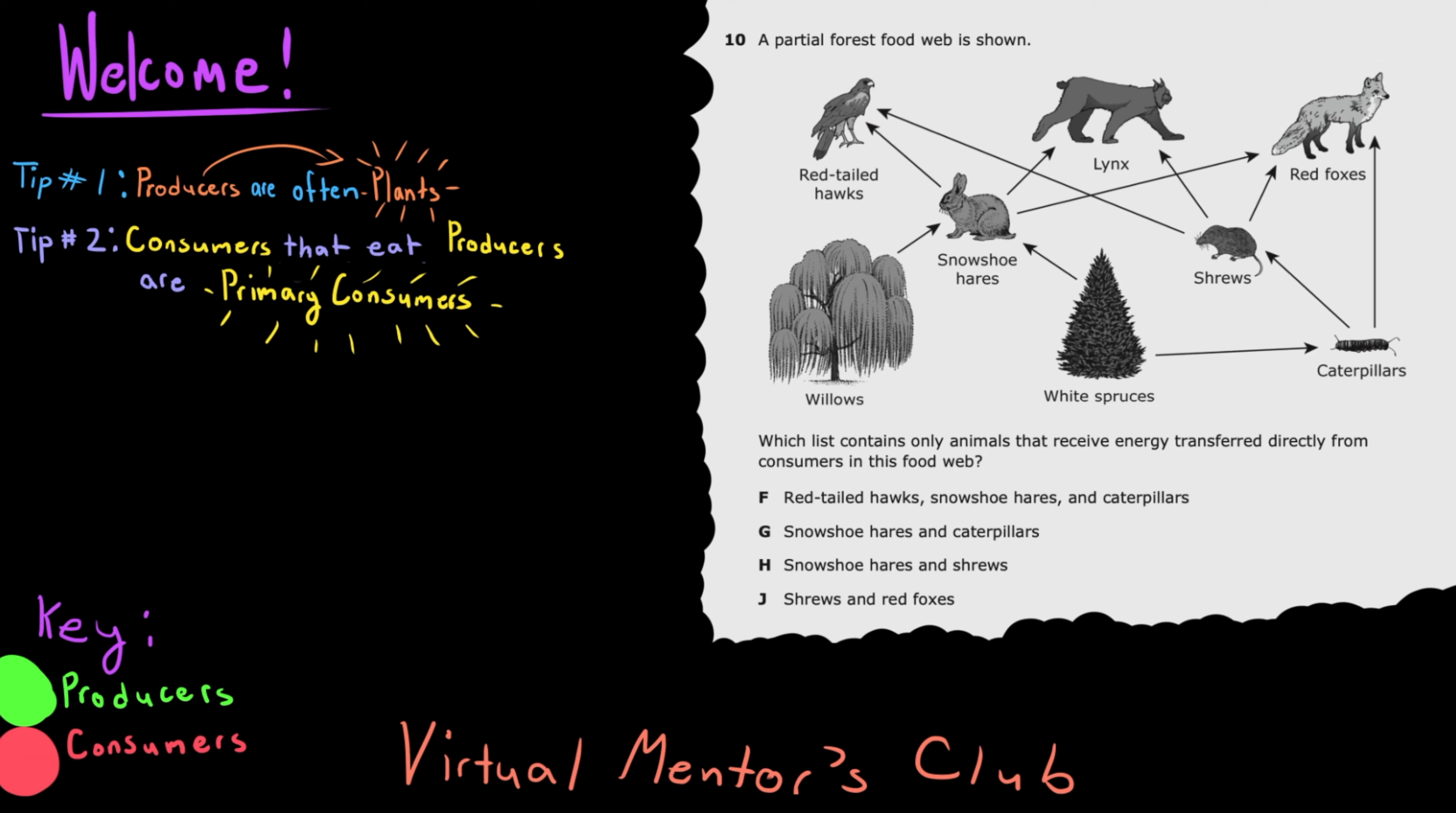Today we will be reviewing how energy flows through a food web and how to solve questions regarding the classification of producers, consumers, and etc.